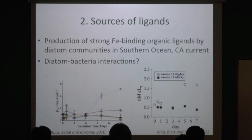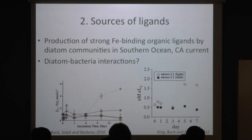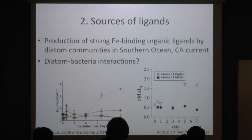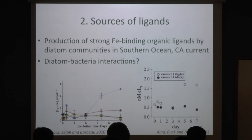On sources, sinks, and cycling of ligands: one thing we do in my lab is grow up organisms and then kill them, looking at how ligand concentrations change over those cycles. In incubation experiments with diatom communities in the Southern Ocean and the California Current, we see production of strong iron-binding ligands over time as the diatom communities start to grow. This surprises us because we think of strong iron-binding ligands as coming primarily from bacteria, which have the machinery to produce very strong iron-binding ligands called siderophores. What we've proposed is that it's not the diatoms producing them, but the bacteria living on the surface of those diatoms — a mutualistic interaction. We leave for the Southern Ocean next week to test that hypothesis.